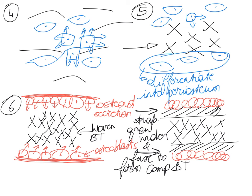Before I wrap this up, the next ossification process has many similarities. Osteoblasts always have the same function: secreting osteoid, which gets mineralized to form trabeculae. In some areas the trabeculae remain, and in other areas the trabeculae are triggered to continue growing wider — the osteoblasts keep secreting osteoid that gets mineralized to make bigger and thicker trabeculae that ultimately fuse to form compact bone tissue.